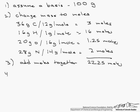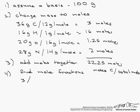Step 4 is to find the mole fractions. If you remember the definition of mole fraction, it is the moles of carbon divided by total moles. We're going to do that for each one. We have 3 moles of carbon. If we divide that by 22.25, we have 0.135. For hydrogen, we have 16 moles.